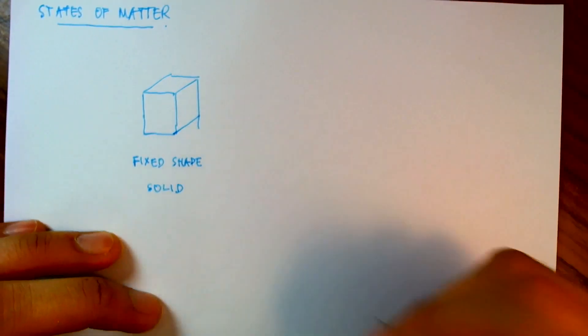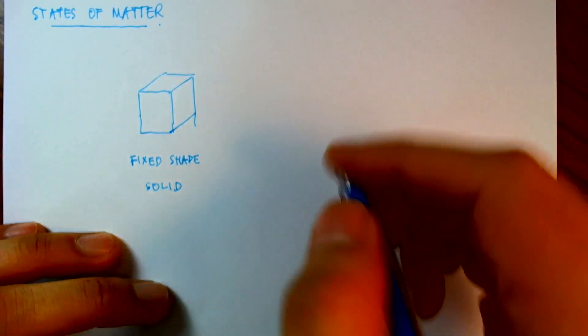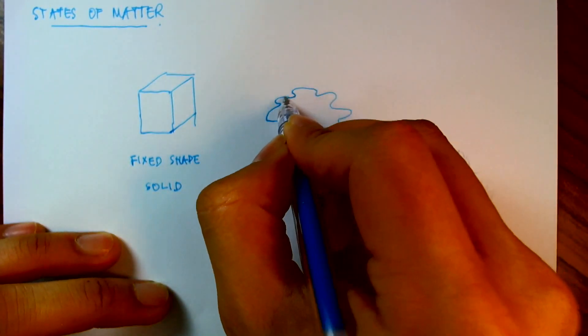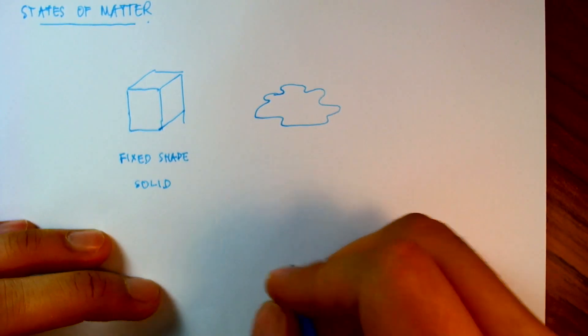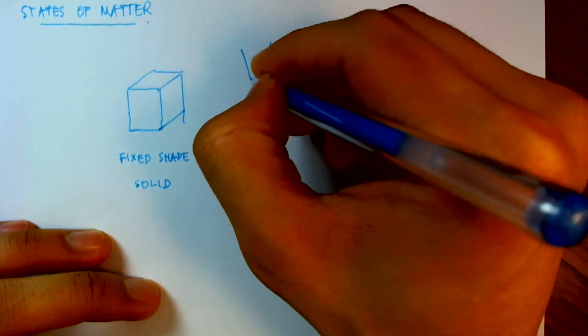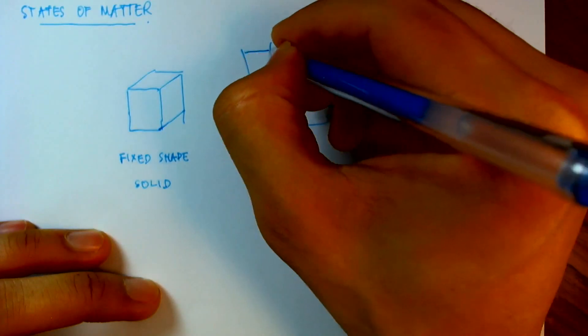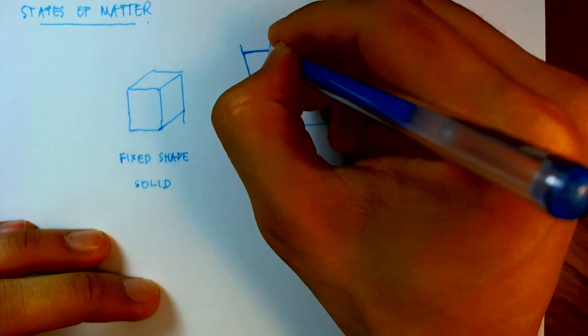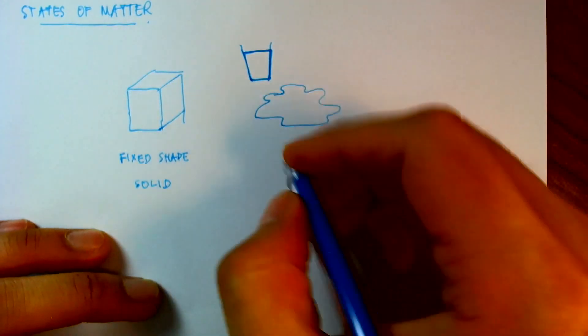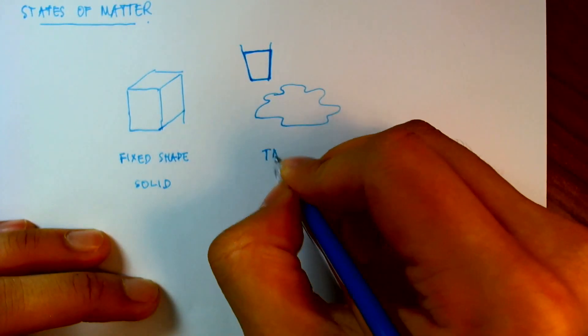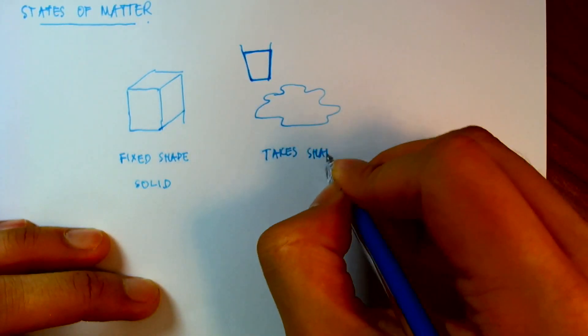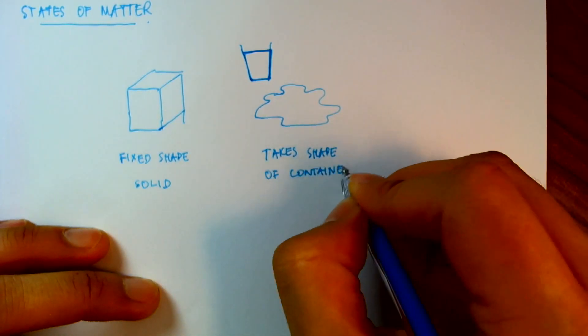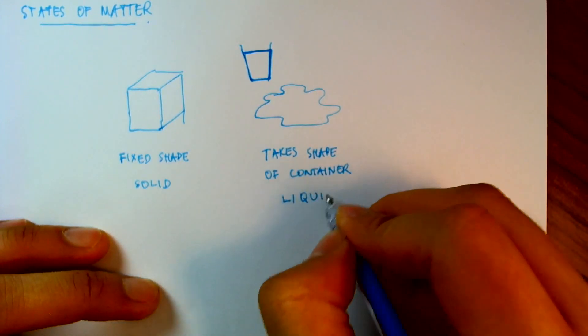Now as you increase the temperature and heat this piece of ice, it starts to melt. And eventually, all of it turns into something that flows around freely. And if I were to put the water in a cup, it would take the shape of the cup. So this state of matter can take the shape of its container, and something like that we call liquid.